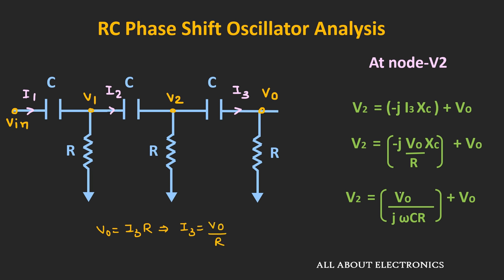The output voltage will only have a real part, so the imaginary part of the expression must equal zero. Equating the imaginary part to zero: 6/(ωCR) − 1/(ω³C³R³) = 0, which simplifies to ω²C²R² = 1/6. Therefore ω = 1/(√6·RC), and the oscillation frequency is f = 1/(2πRC√6).